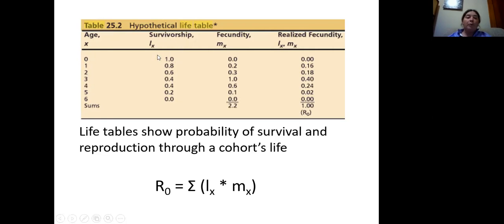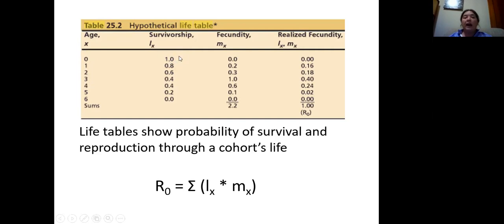At birth, everybody's alive, so you have a survivorship of 100% — everybody who's born is there because they were just born. This survivorship number is going to drop between each year based on the number of individuals who die from age zero to age one, from age one to age two. For example, at age one only 80% of individuals originally alive are still alive; at age two, there's only 60% of the original individuals; age three is 40%, et cetera, until you get to the point where there are no remaining individuals.